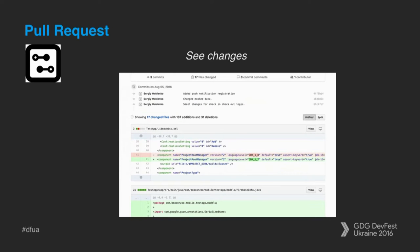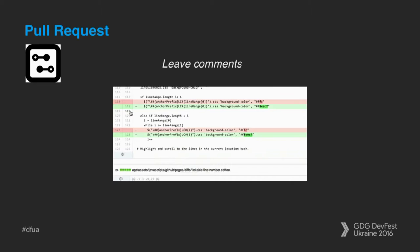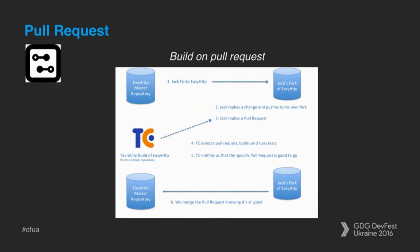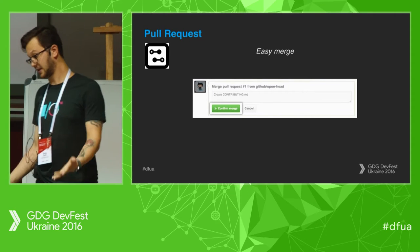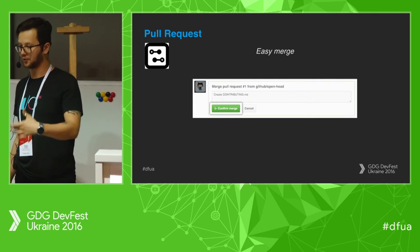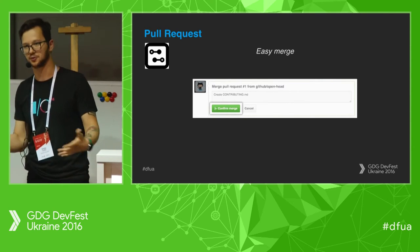Everyone in the room using pull requests? The other half, please start — it's a really useful tool. You can leave comments, and the other developer who wrote that code can understand what he's doing wrong before he merges. You can see changes — you only look at the diff, not the whole feature. Also, build on pull request is great, and you can set up pull request merging to require a rebase before the actual merge.